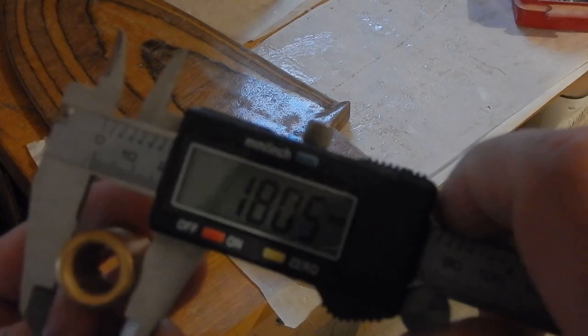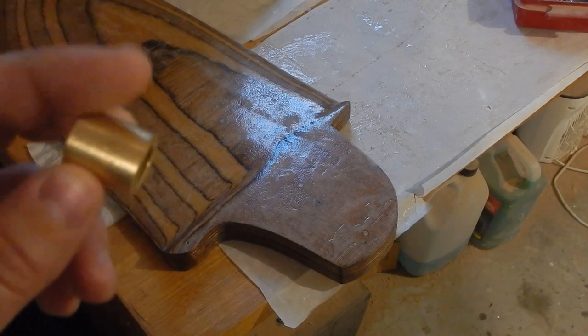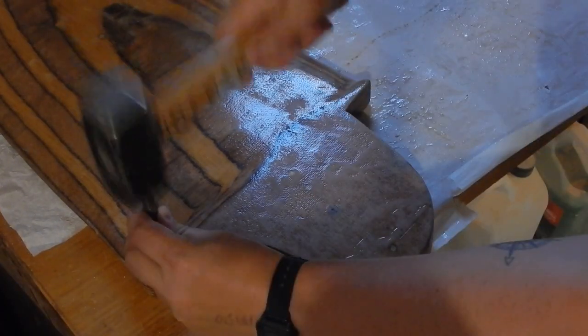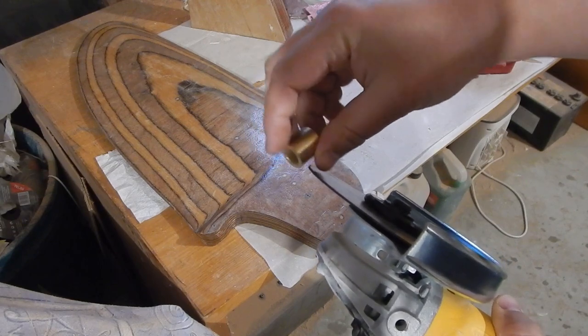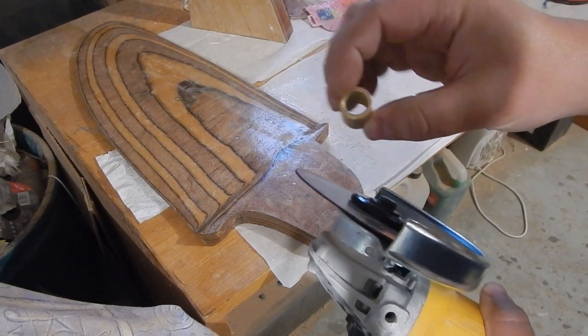Let's see, 18 millimeters. I need to drill that 18 mil hole and get a couple of these bushings in there. Not to forget, I have to put some scores in so that the epoxy will grip them a little bit better.